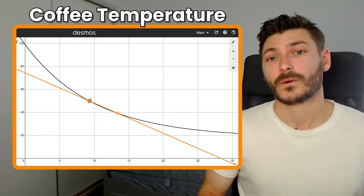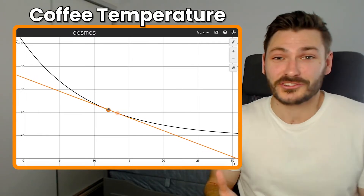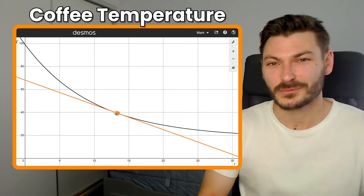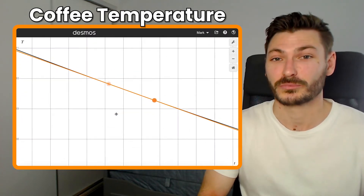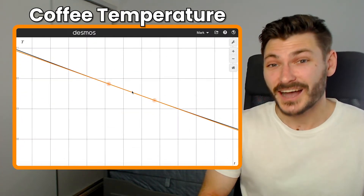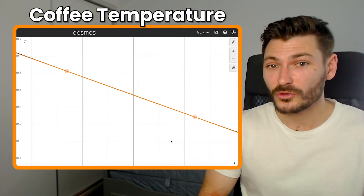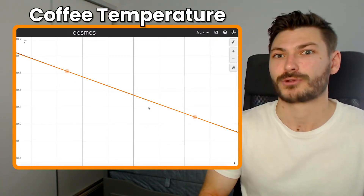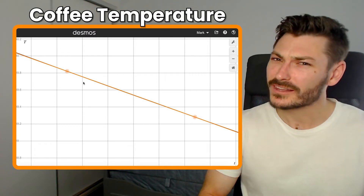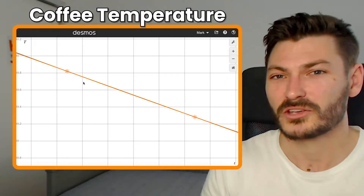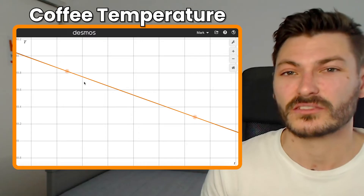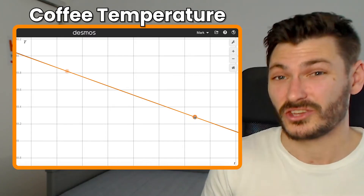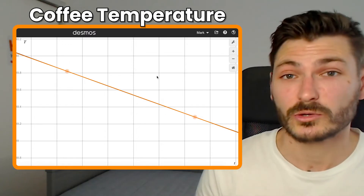We're going to get to a point where those points are so close together that they're basically indistinguishable. However, thanks to Desmos we can zoom in on those two points and see that they are different. You can also see that the orange line representing the average rate of change is more or less the same as the function line, because when we're so zoomed in the function basically turns into a straight line. It is an approximation, but it's quite a good one.